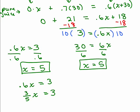X equals 3. And then if you multiply both sides by the reciprocal, you're going to get X equals 5 again.